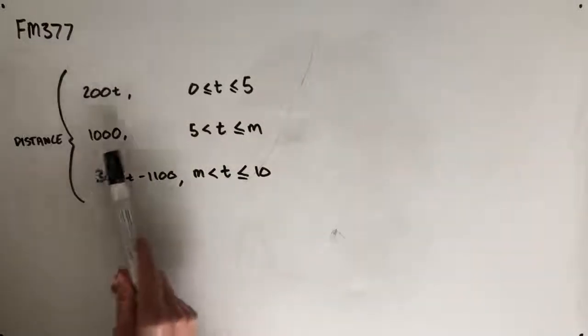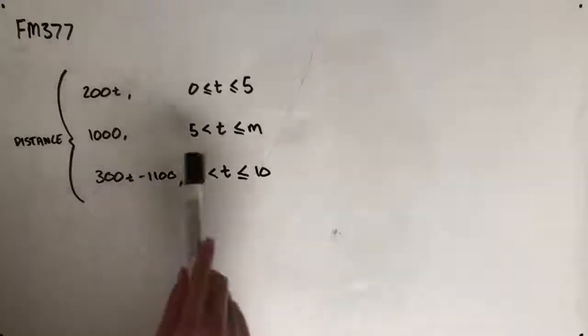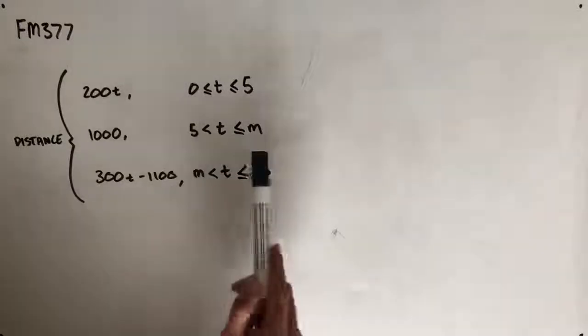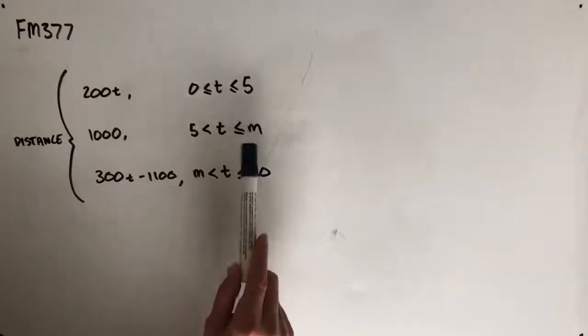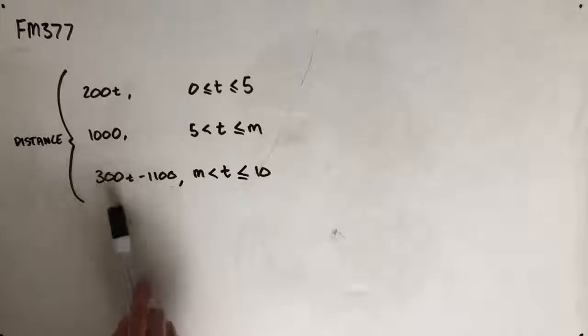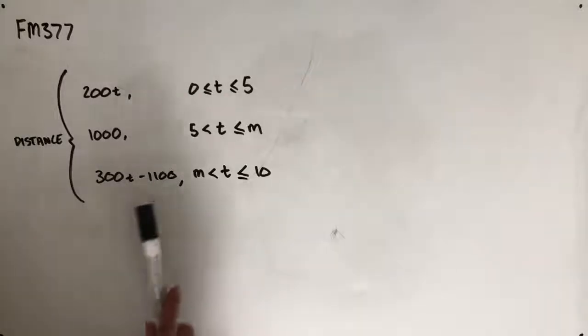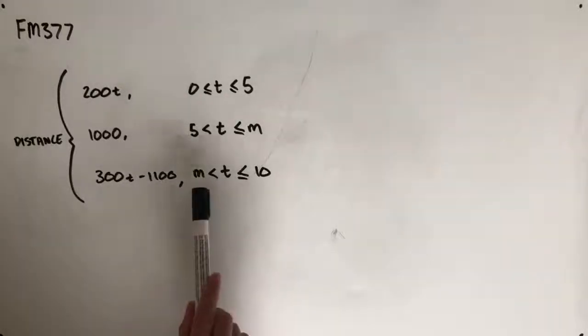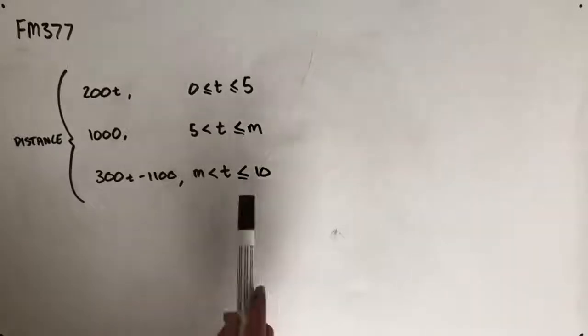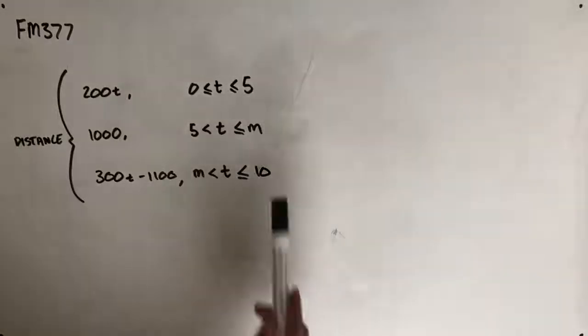Her distance is 1,000 regardless of the value of t between 5 and m, so greater than 5 and then less than or equal to m. And then her distance is 300t minus 1,100 for the values between m, so when t is greater than m or less than and equal to 10.